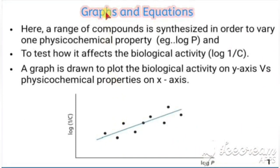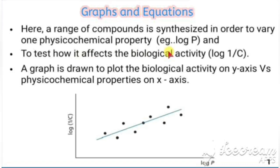Now we are going to see graphs and equations in QSAR. We prepare a range of compounds — a set of compounds to synthesize — in order to vary one physico-chemical property, which can be expressed as log P, and test how it affects biological activity, represented as log 1/C. So we have two variables: log P as the physico-chemical property and log 1/C as biological activity.